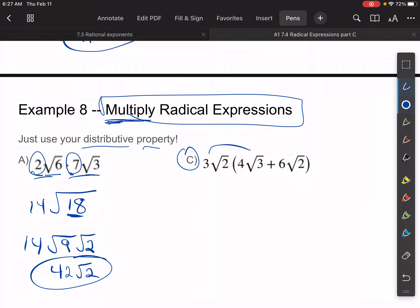Then for part C, I'm going to distribute. So 3√2 × 4√3 gives me 12√6, because 3 × 4 is 12. 2 × 3 is 6. And then I have 3√2 times 6√2. And I'm going to add that. 3 × 6 is 18. √2 × √2 is just 2. So it's actually √4, but √4 is just 2.